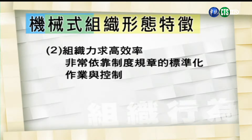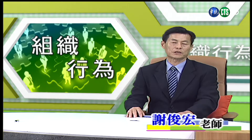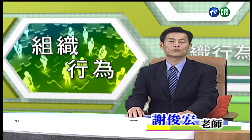一个组织如果要力求高效率，必须依靠制度规章的标准化作业与控制。这种组织形态会将组织内因员工不同性格、不同判断及对问题认知差异所造成的冲击降到最低。在机械式组织形态下，所有和人有关的特征一律被视为会妨害效率的最大变数。